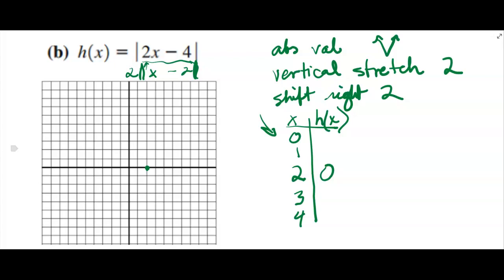Plug in 0. 0 minus 2 is minus 2. Absolute value is 2. 2 times 2 is 4. So 0, 1, 2, 3, 4.